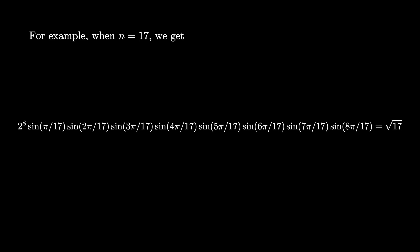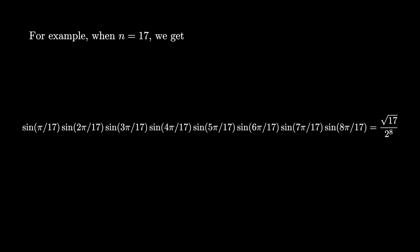Here's just one example of these identities when n equals 17. We see that we have 8 products, so we get 2⁸ multiplied by the sines of π/17 up to sin(8π/17), and we get √17. When we divide both sides by 2⁸, we have this nice formula for the product of the sines of the angles π/17 up to 8π/17, where each angle increments by π/17.